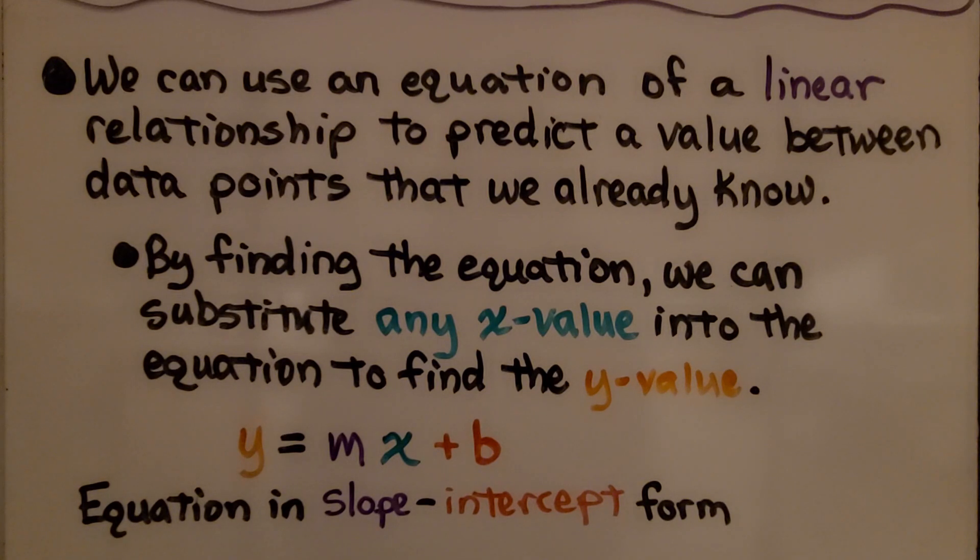By finding the equation, we can substitute any x value into the equation to find the y value. Here we have an equation in slope-intercept form. We'll be able to write our equation with the slope and the y-intercept b and substitute any value for x to find y.